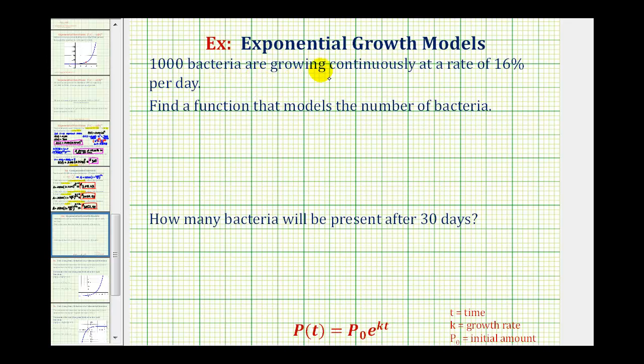1,000 bacteria are growing continuously at a rate of 16% per day. We want to find a function that models the number of bacteria and also determine how many bacteria will be present after 30 days.